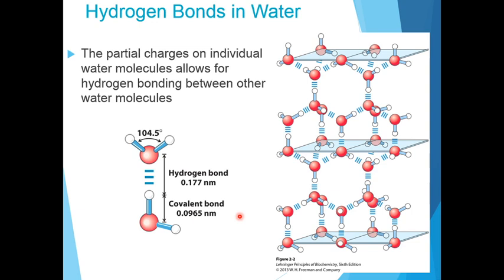The nearly tetrahedral arrangement of the orbitals about the oxygen atom allows each water molecule to form hydrogen bonds with as many as four neighboring water molecules. The structure, the figure that is shown here, is that of ice. In ice, each water molecule is fixed in space and forms hydrogen bond with a full complement of four other water molecules